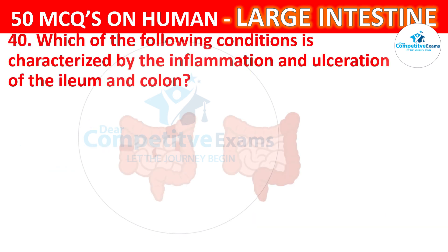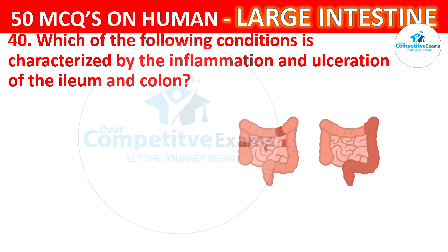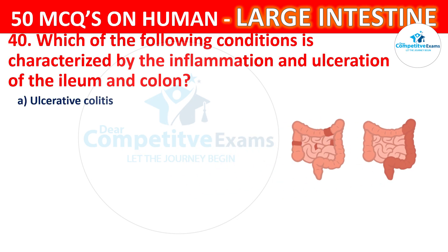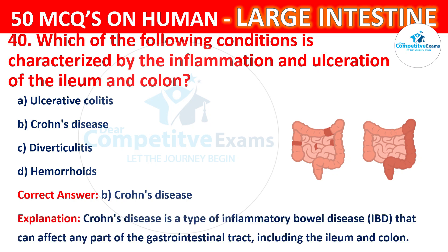Question number 40. Which of the following conditions is characterized by the inflammation and ulceration of the ileum and colon? The options are Ulcerative colitis, Crohn's disease, Diverticulitis, or Hemorrhoids. The correct answer is B, that is Crohn's disease. Crohn's disease is a type of inflammatory bowel disease (IBD) that can affect any part of the gastrointestinal tract, including the ileum and colon.